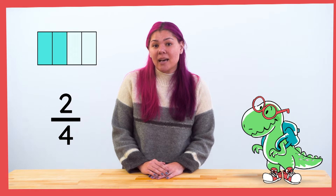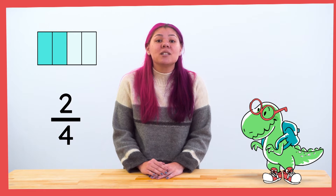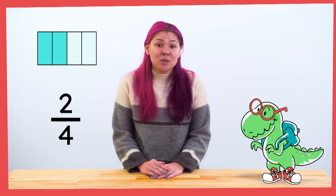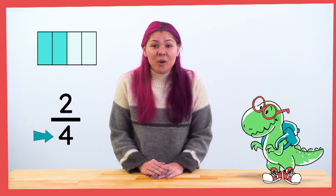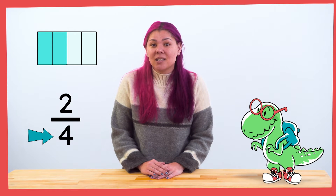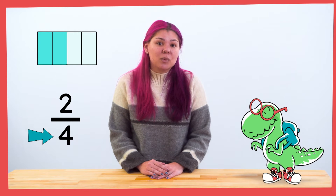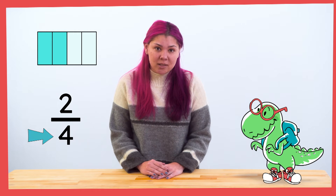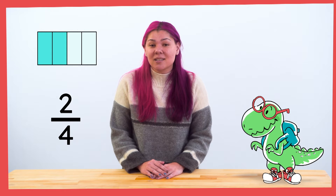Here is the fraction two-fourths. How many parts has this whole been partitioned into? Partition means to cut into equal parts. The whole has been cut into four equal parts. So in the fraction two-fourths, the denominator is four because that is the number of same-size units we partition the whole into.